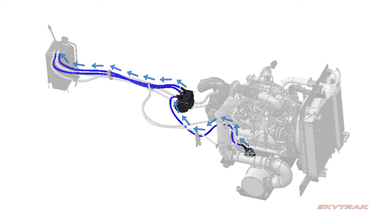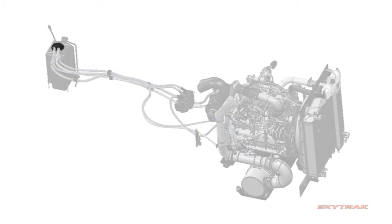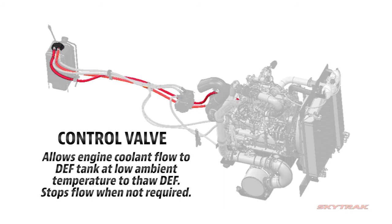In cold ambient conditions, a heating loop integrated into the DEF header carries engine coolant to thaw DEF and maintain temperature above freezing. In warm conditions, the engine coolant is shut off by an electronically activated valve in the engine coolant supply line.